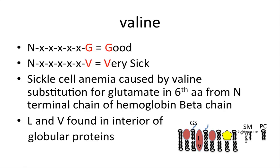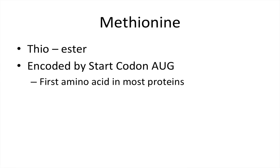Leucine and valine are found in the interior of globular proteins, which was covered in the membrane lecture. You see a high concentration of leucine and valine amino acids in integral proteins that span the plasma membrane. Methionine has a thioether group in its R group and is encoded by the start codon AUG, so it is often the first amino acid in most proteins — the tRNA recognizes AUG and brings methionine to the very first position.